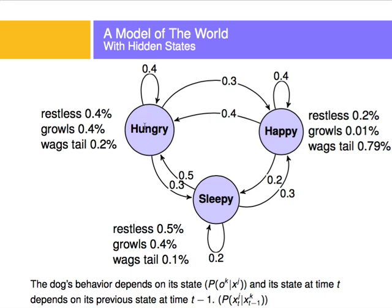In terms of transitions, from being hungry at time step T minus 1 to being hungry now at time step T, there's a 40% chance. There's a 30% chance the dog will be happy after being hungry, and a 20% chance it will be sleepy after being happy. There's also a 30% chance the dog will be happy given that it was sleepy in the previous time step. So we have emission probabilities and transition probabilities on the arrows.